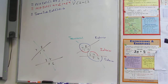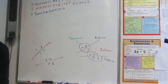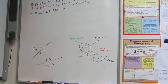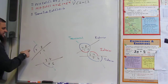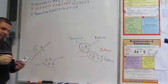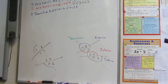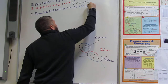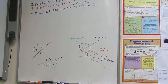Same-side exterior angles means they're on the same side of the transversal yet they're both exterior. So which ones are on the same side yet exterior? Seven and five — they're both exterior and on the same side. Can anyone think of two more? Eight and six. Angle eight and angle six. Is this making sense?